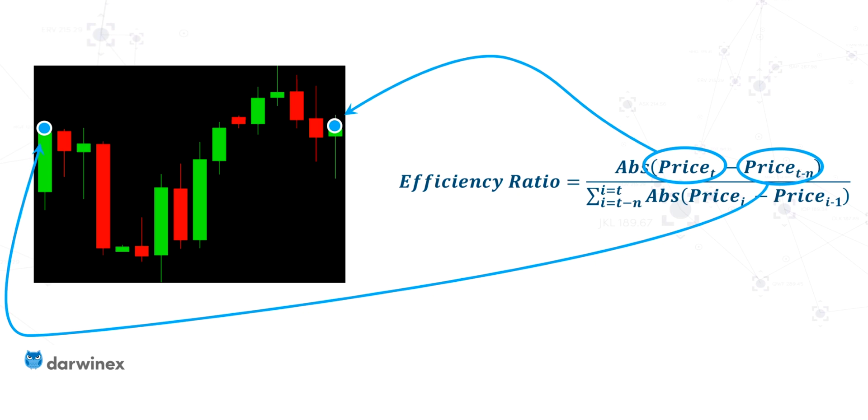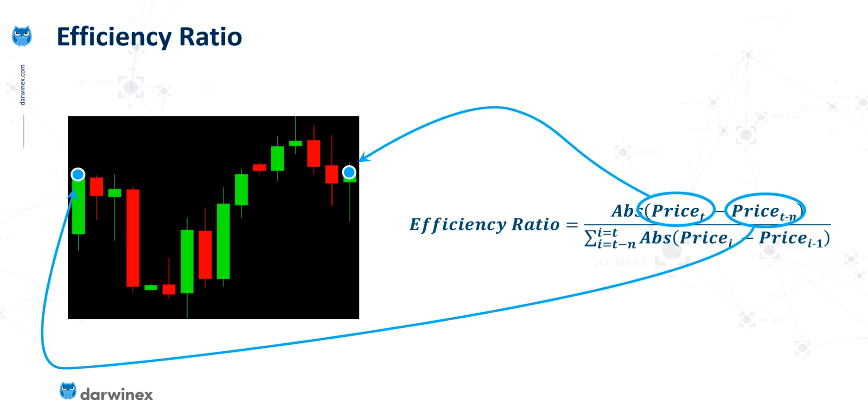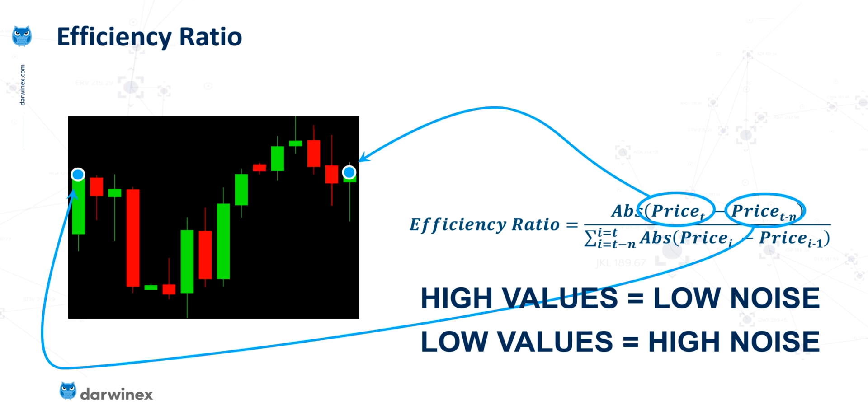So if we think about this, if we have relatively small differences between successive bars compared to a larger net movement, this will give us a high value, which indicates low noise. And when we get low values, that will indicate high noise.